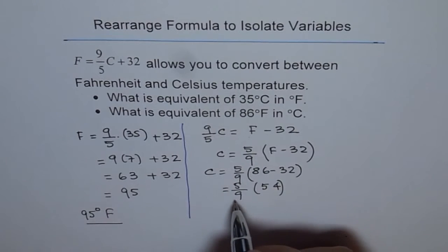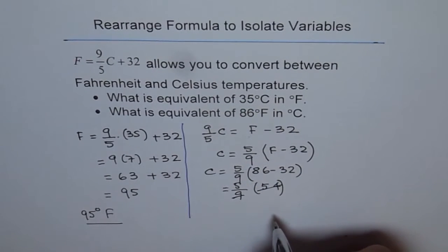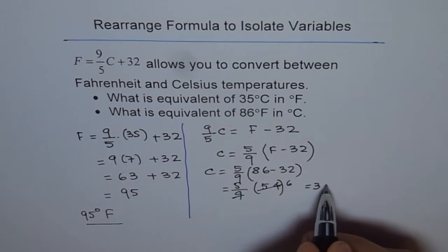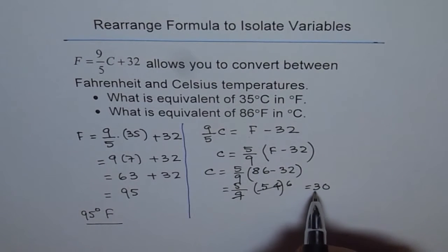And now 9 is how many times 54? 9 is 6 times 54. So we get 6 here. And 5 times 6 is 30. So if you solve this, we get C as 30.